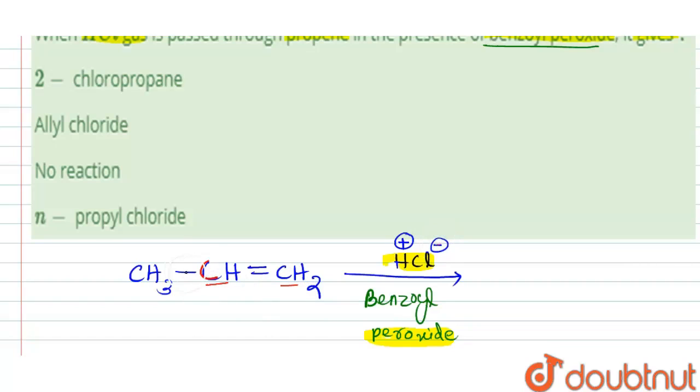Hence, Cl- will come to this carbon, H+ will come to this carbon. We will get the product CH3-CHCl-CH3. The double bond will be reduced to single bond.